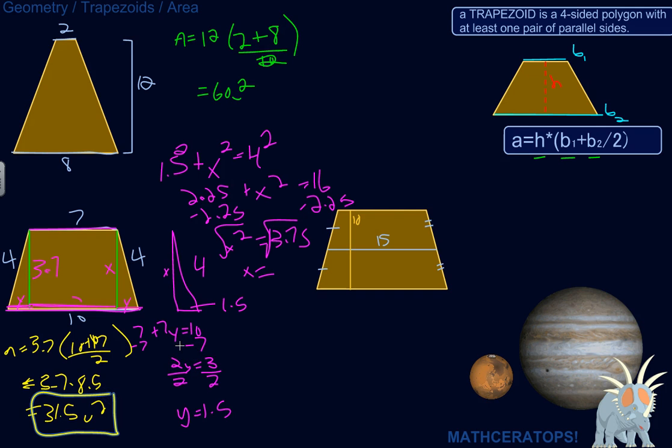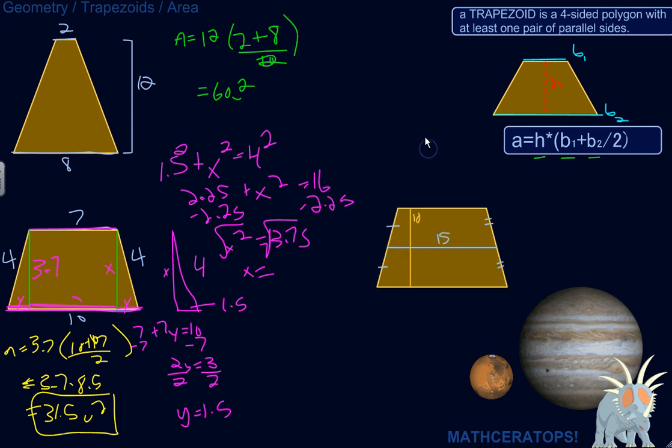31.5 units squared. Alright, so that's a little trick if you've got a regular trapezoid. And then let's look at this one over here. Let me actually just move that one maybe. Okay, so we've got a height of 10, but we don't have either one of the base lengths. What are we going to do? Well, we have this line here. And these congruence marks are saying that this line segment has the same length as this line segment. And same thing over here. This line segment has the same length as this line segment. Meaning, this line segment here that's 15 units long is bisecting each one of the non-parallel sides, which means it's halfway from base to base. Is that making sense? Halfway, halfway. Okay.